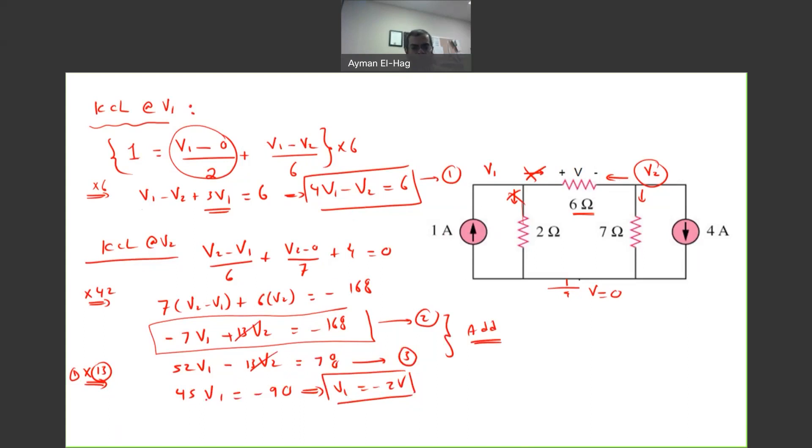So, from equation 1, you can say that if you move V2 to this side, and this to this side, you will have V2 is equal to 4 V1 minus 6.